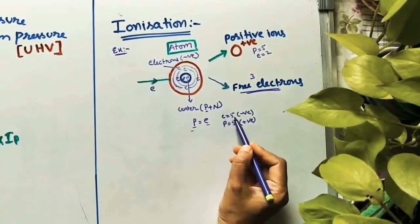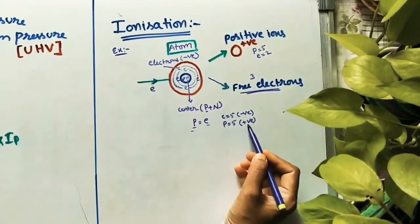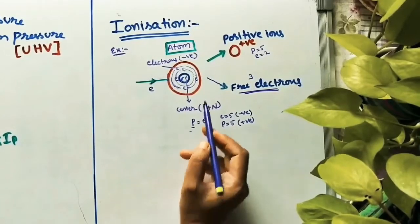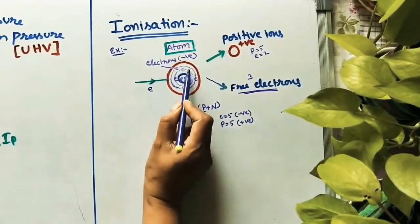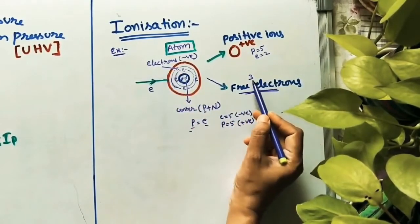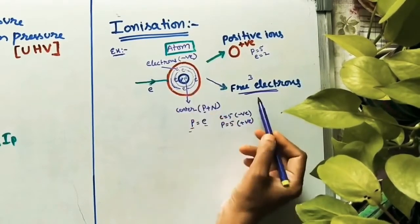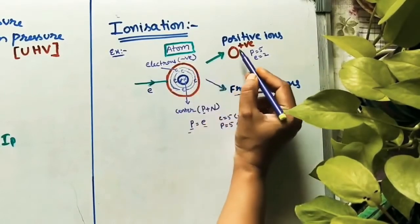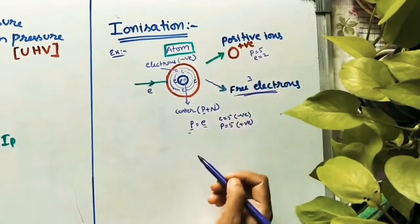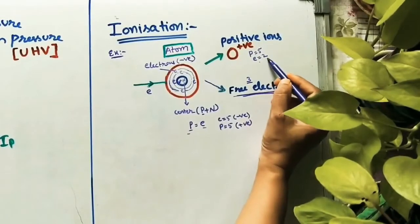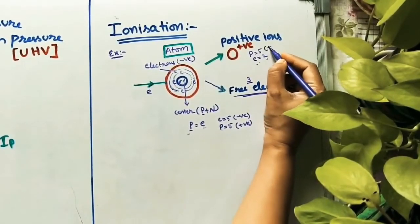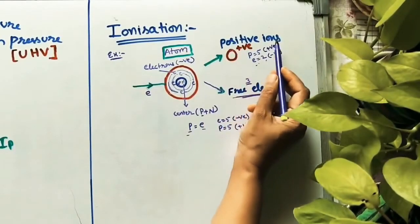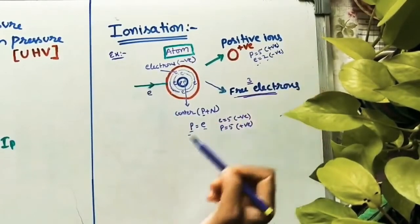Let us assume the number of electrons is phi, negative charge, and protons P is equal to E phi, positive charge. Now if I give some energy — some electron is striking this atom — it is divided into two parts. Whatever electrons are there in the outer orbit, those are coming out. These electrons are called free electrons. And whatever atom remains, since negative charge has left, it should be positive now. This atom is now a positive ion. Assume three electrons came out; only two electrons remain. Protons are the same, so positive charge is more compared to negative charge. That is why the entire atom is called a positive atom or positive ion.